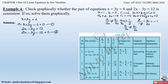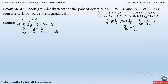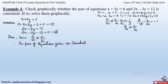Therefore we can say that the lines are intersecting. Since a₁/a₂ ≠ b₁/b₂, the two given equations are consistent. So let us now solve them graphically.